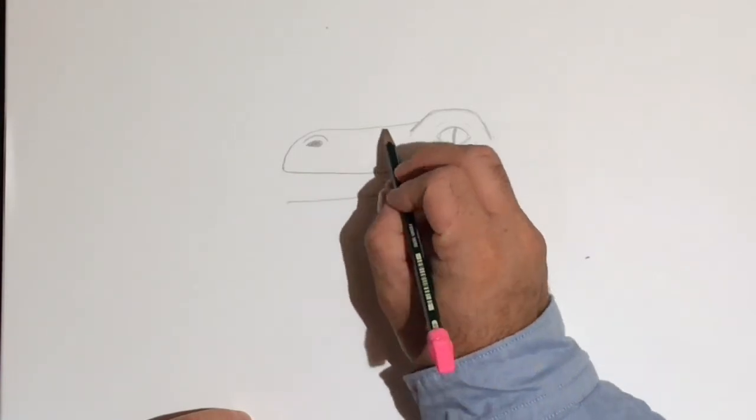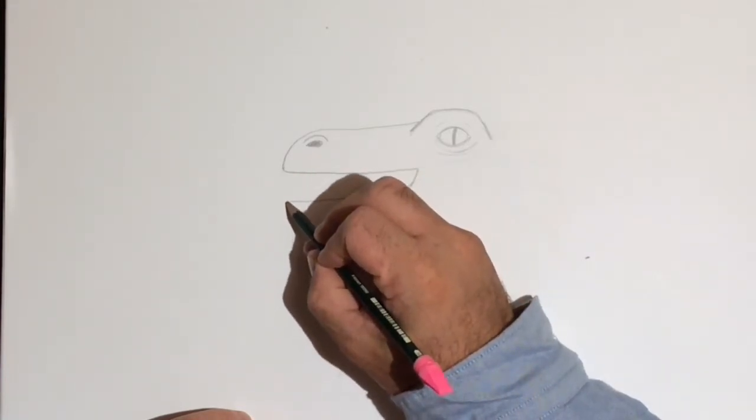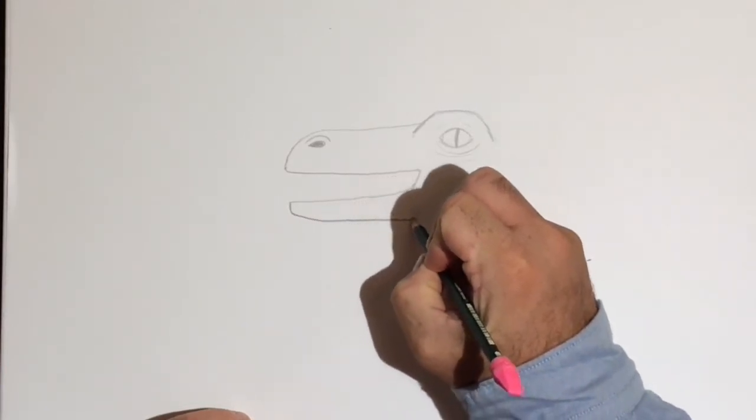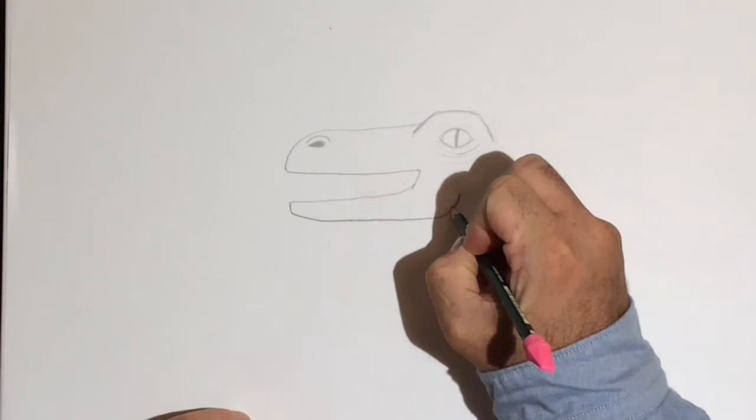And I'm going to do this same shape but just bring it down below. So I'm going to go down, bring it back and curve up, and that's the jaw.